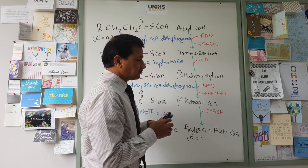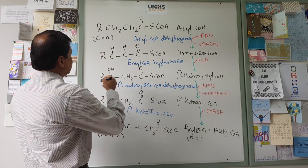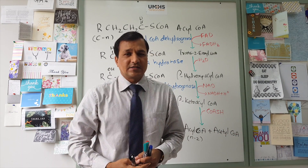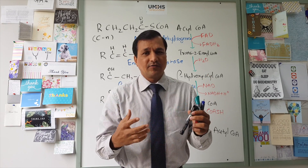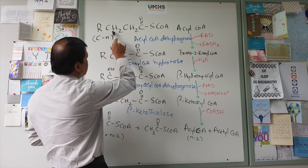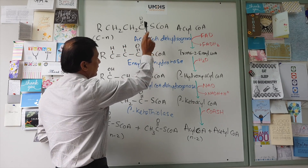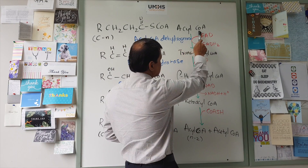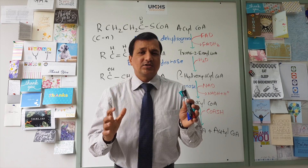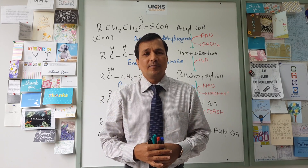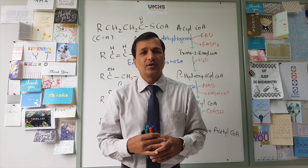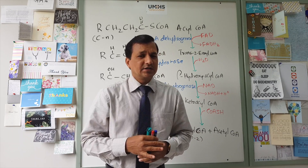I have written beta oxidation process here, taking a fatty acid with N number of carbon atoms. The activated fatty acid looks like RCH2CH2-C(=O)-SCoA, which is a fatty acyl-CoA molecule. Note that a fatty acid must be in activated form to be oxidized; I have already made a video on fatty acid activation.